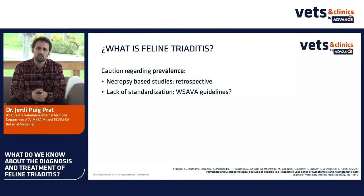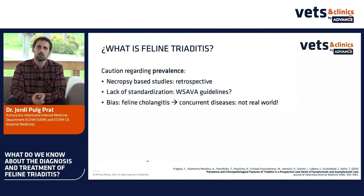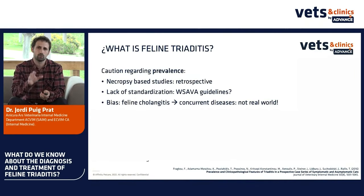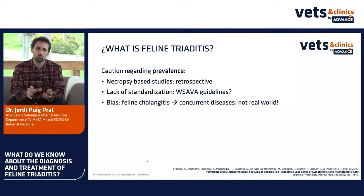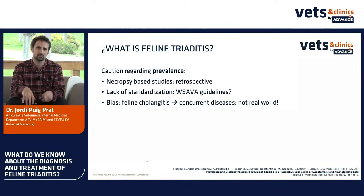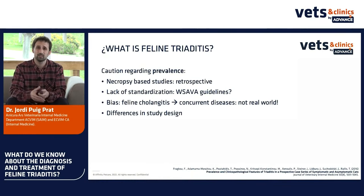Most studies lack standardization — we'll talk later about the World Small Animal Veterinary Association guidelines regarding histopathology changes of the liver. Most didn't follow any standardization of what is a normal or abnormal liver. When we talk about bias, most cases started with a population of, for example, feline cholangitis, and then looked for concurrent diseases like intestinal inflammation or pancreatitis. This data cannot be applied to the real world because we already started from a biased population. We have to be very careful when we compare data between those studies.